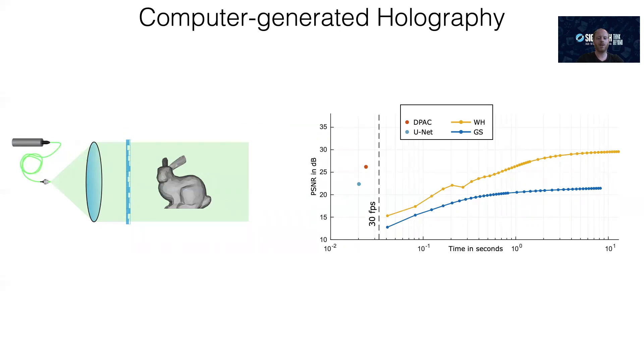In our ETAC paper, we show that a simple stochastic gradient descent approach actually achieves the best image quality of all iterative methods in simulation, and we've developed a neural network architecture called HoloNet that achieves almost the same quality in real time. Let me tell you a little bit more about these new approaches to computer-generated holography.